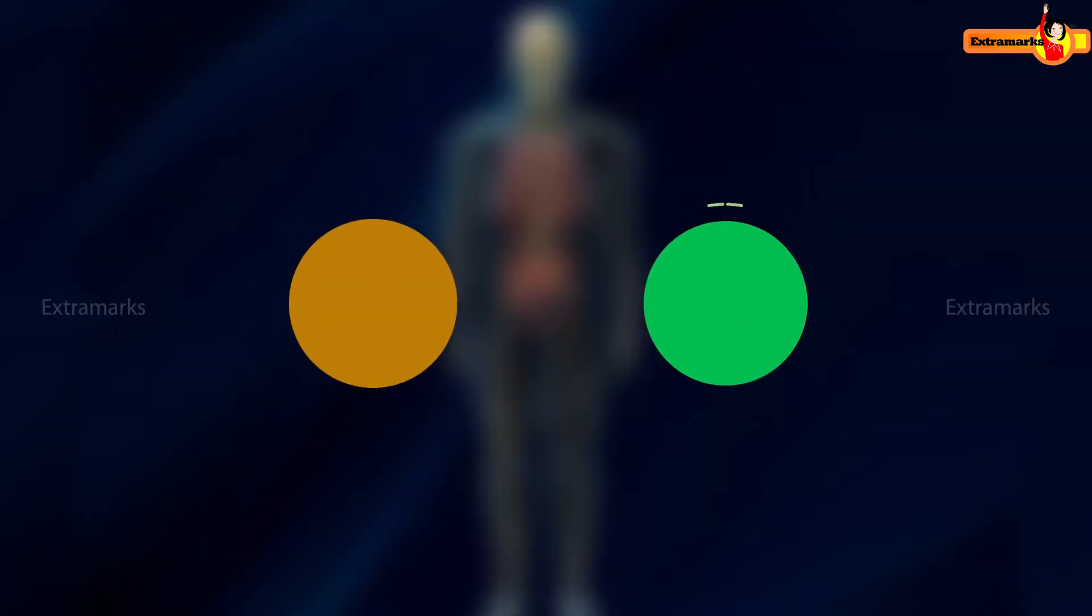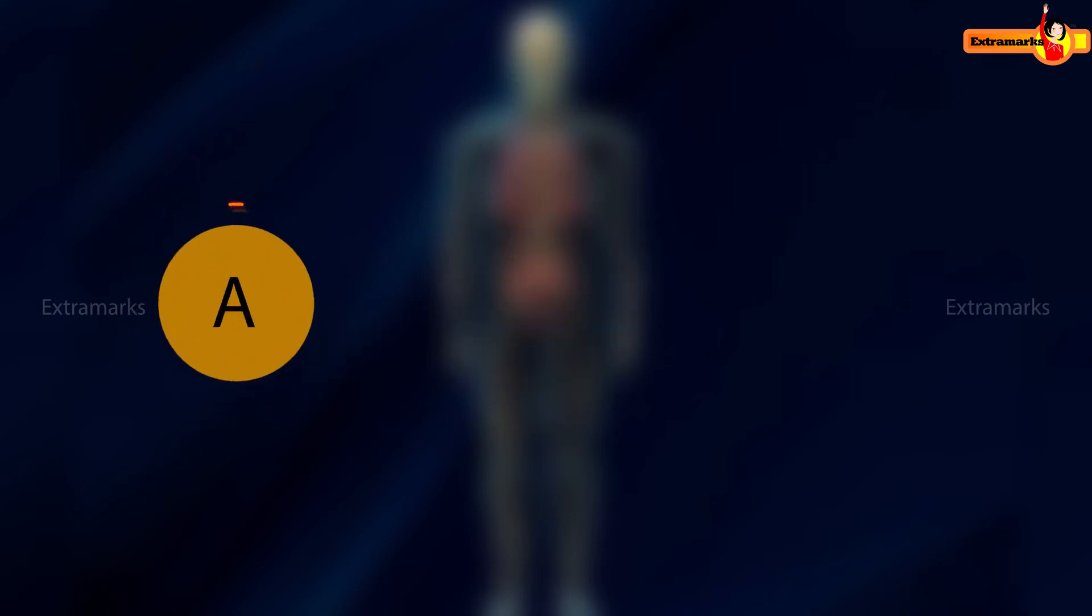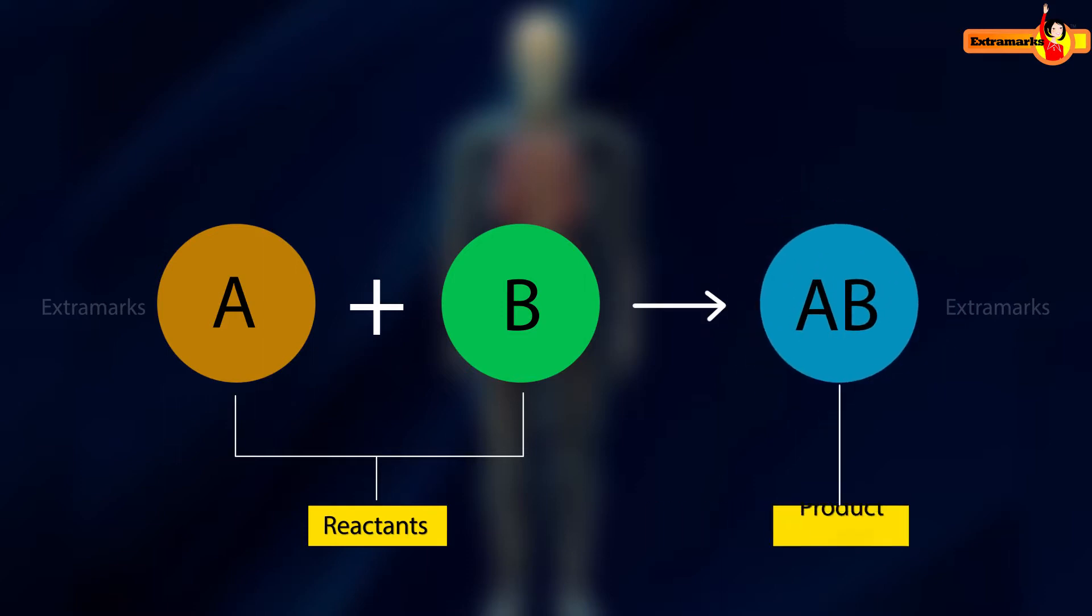In a combination reaction, two substances react to form a single product. For example, in general, A reacts with B to form a single product AB. Notice here the product formed is always a compound.